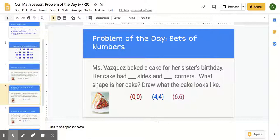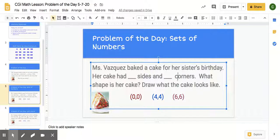Set of numbers. Let's reread the story. Miss Vasquez baked a cake for her sister's birthday. Her cake had zero sides and zero corners. What shape is her cake? We can choose 0, 0, 4, 4, 6, 6. Let's think. What shape shall we use? What do you think the cake is going to be?